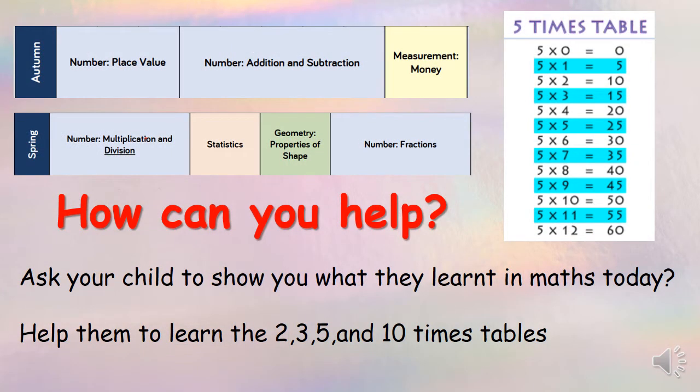Last term we continued learning about number and place value, which is what children were learning in Year One as well, then number and addition with subtraction, and then before we broke up we looked at money. Now this spring term we will continue to use the knowledge learned in the autumn term. This part of the term we are going to be looking at multiplication and division. Then we will move on to statistics, properties of shape and fractions.